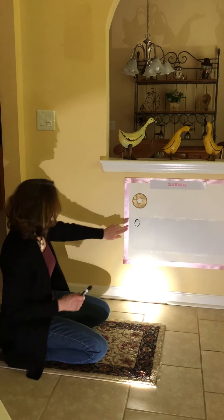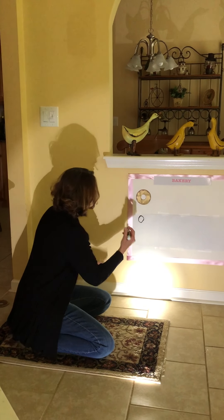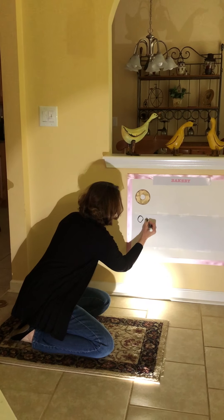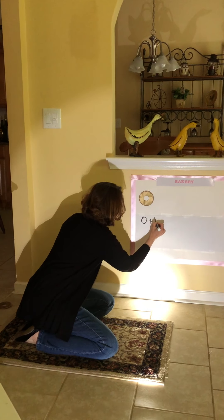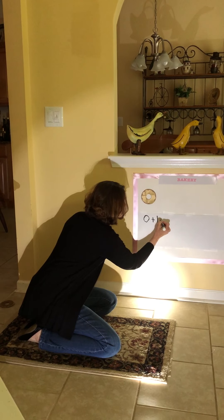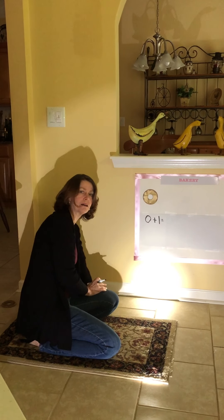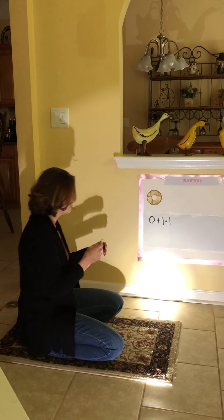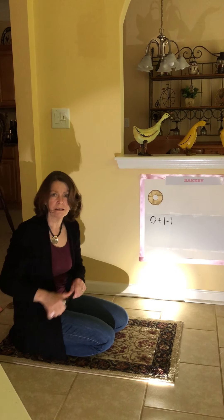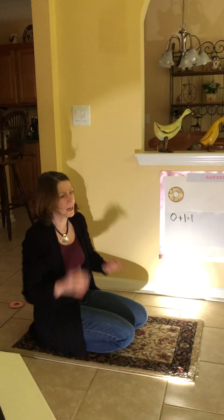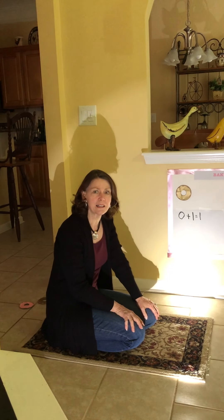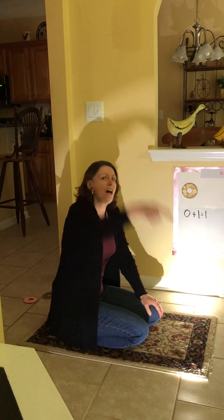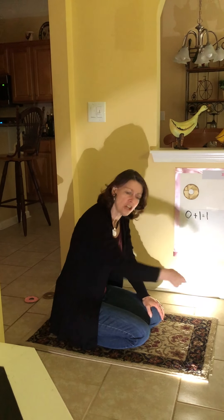Now, we had zero. Now we're going to add one. Zero plus one equals... how many donuts do we have? We have one donut. Very, very good. But we're still hungry, aren't we? So we have to wake the baker up again — he's sleeping. Here we go, it's time to make the donuts.